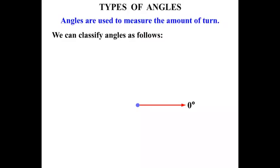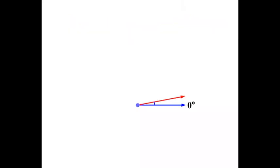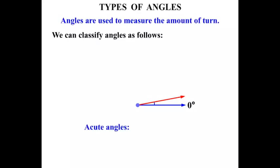Now we're trying to classify the angles. We can classify them as follows. If we start turning that red arm we have created an angle, and that angle is an acute angle. Acute angles are between zero degrees and 90 degrees. So if we keep turning the red arm all of those angles shown are still acute angles.